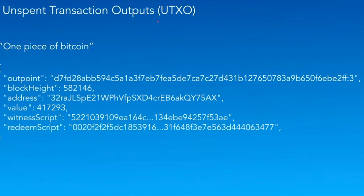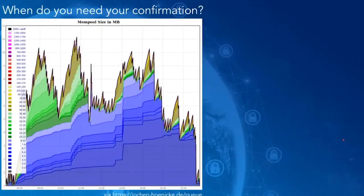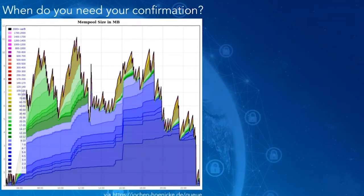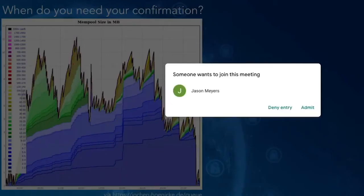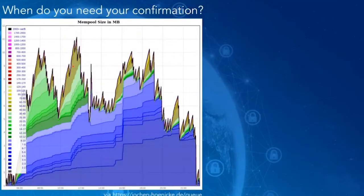Especially in the last two weeks, you might have asked yourself: how quickly do I need my transactions to confirm? We've had a little bit of congestion. That's not a trivial problem, because when you send a transaction, you basically get a single chance. You pick a fee rate and add your transaction to the stack waiting to be confirmed. Other people keep adding more transactions, and when a block is found, the transactions paying the most fees get included. A lot of people think their transaction needs to confirm in the next block, so they pay horrendous fees.